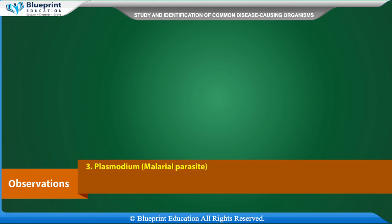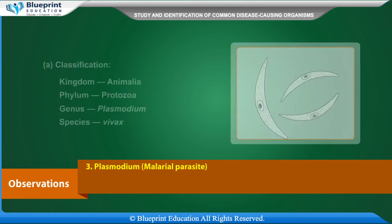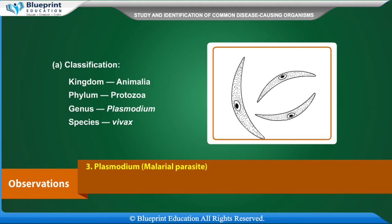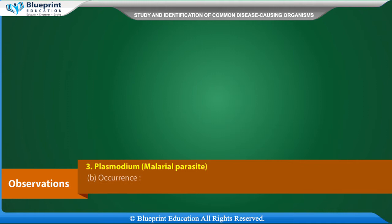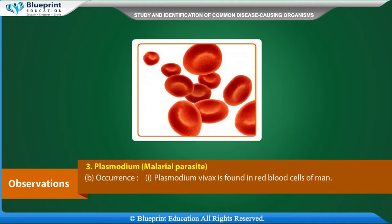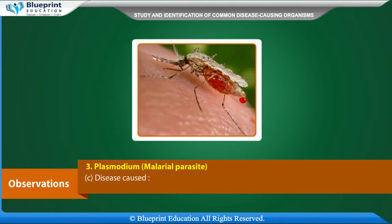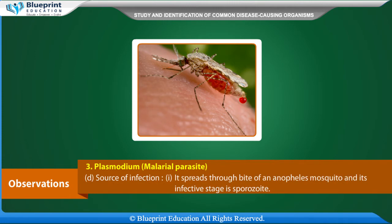Plasmodium malarial parasite classification: Kingdom Animalia, Phylum Protozoa, Genus Plasmodium, Species vivax. Plasmodium vivax is found in red blood cells of man. The disease caused is malaria. Source of infection: it spreads through the bite of an Anopheles mosquito, and its infective stage is the sporozoite.